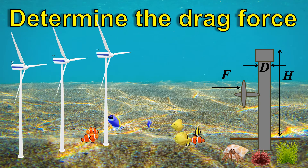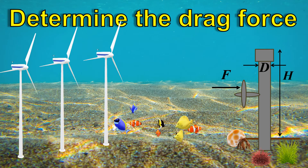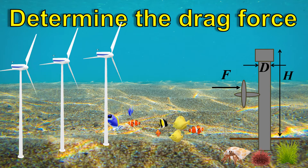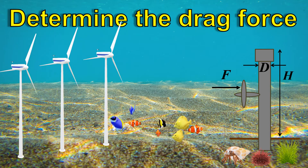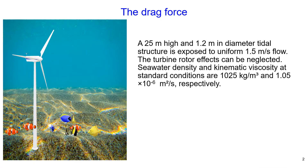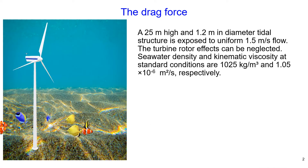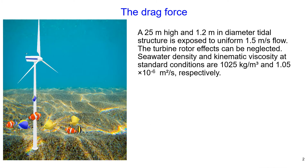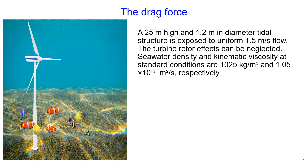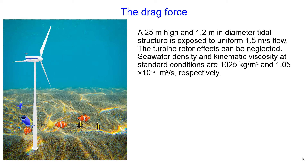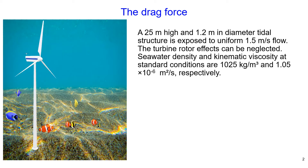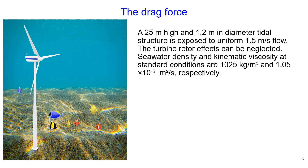In this video I will cover a practical problem: how to determine the total drag force acting on a structure. The problem involves a 25 meters high and 1.2 meter in diameter tidal structure exposed to a uniform 1.5 meters per second flow. We can neglect the turbine rotor effect and take sea water density and kinematic viscosity at standard conditions.